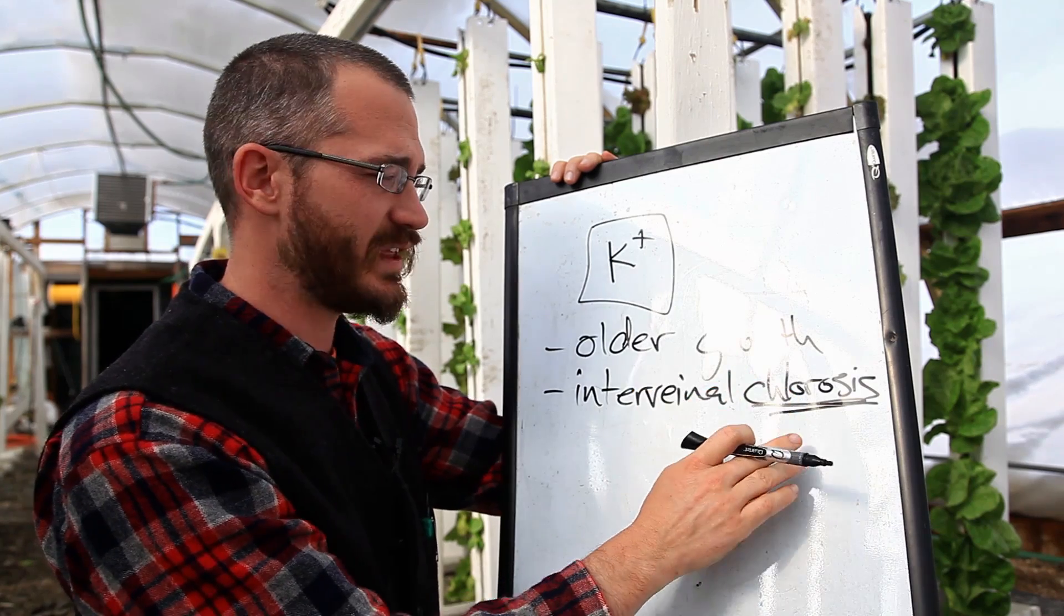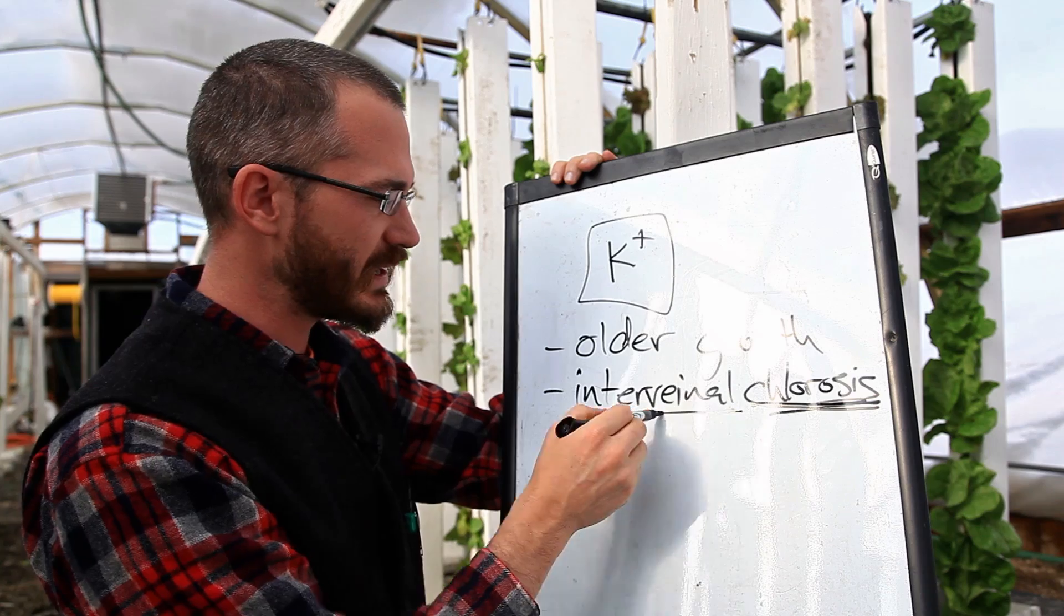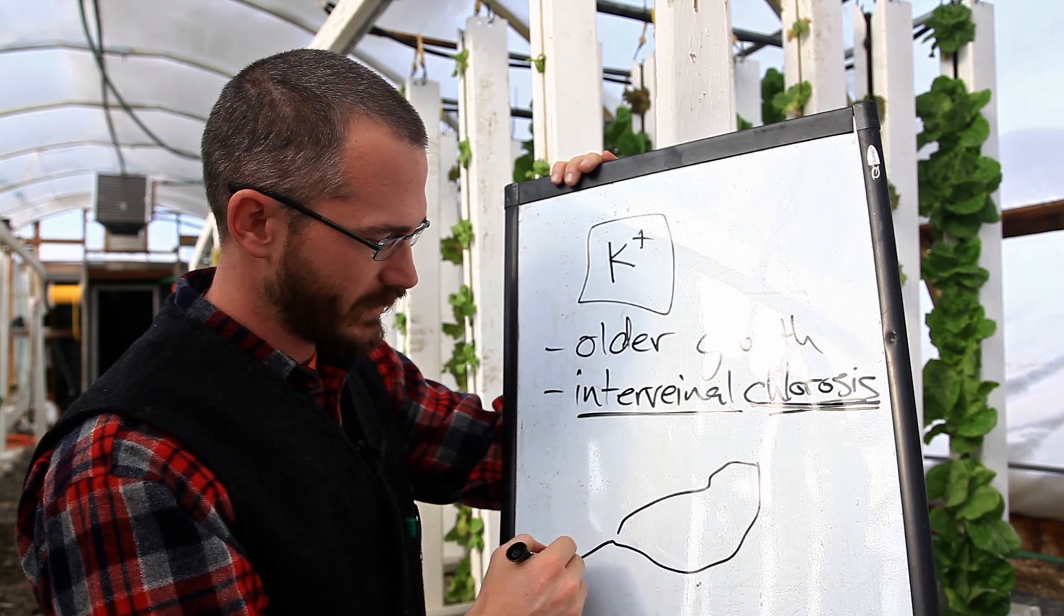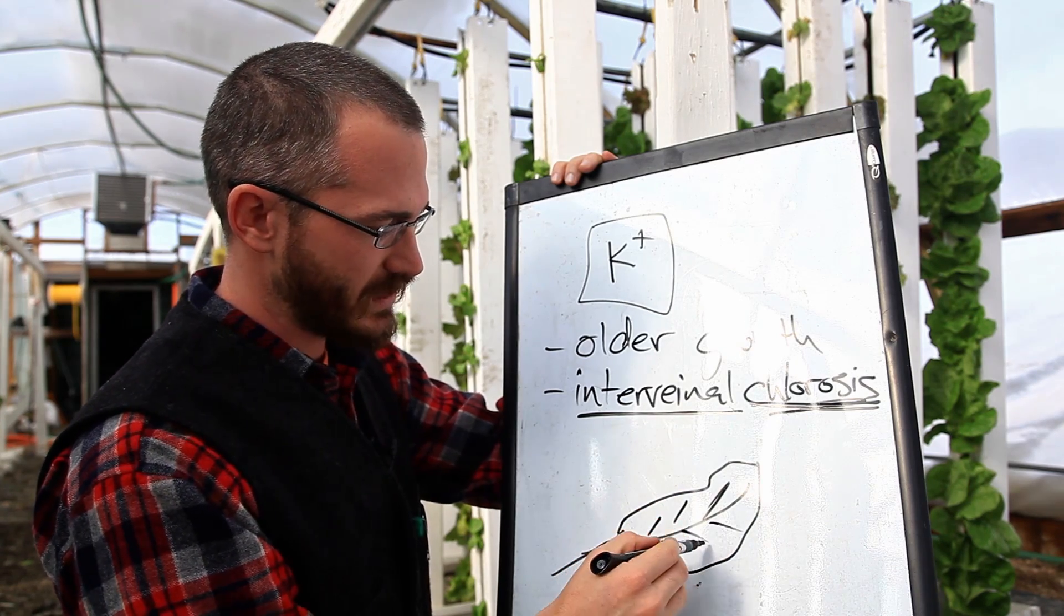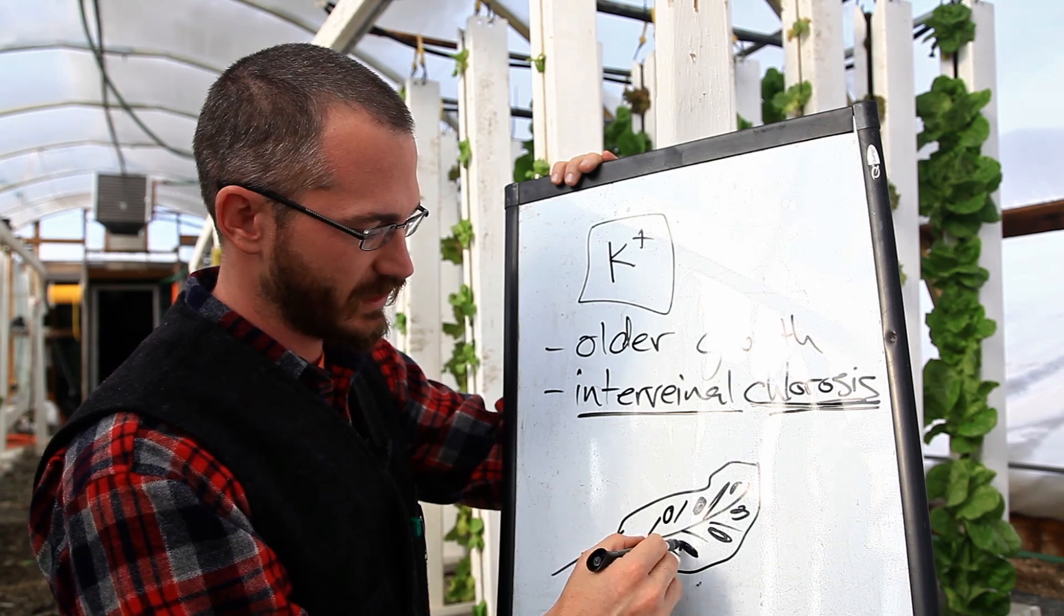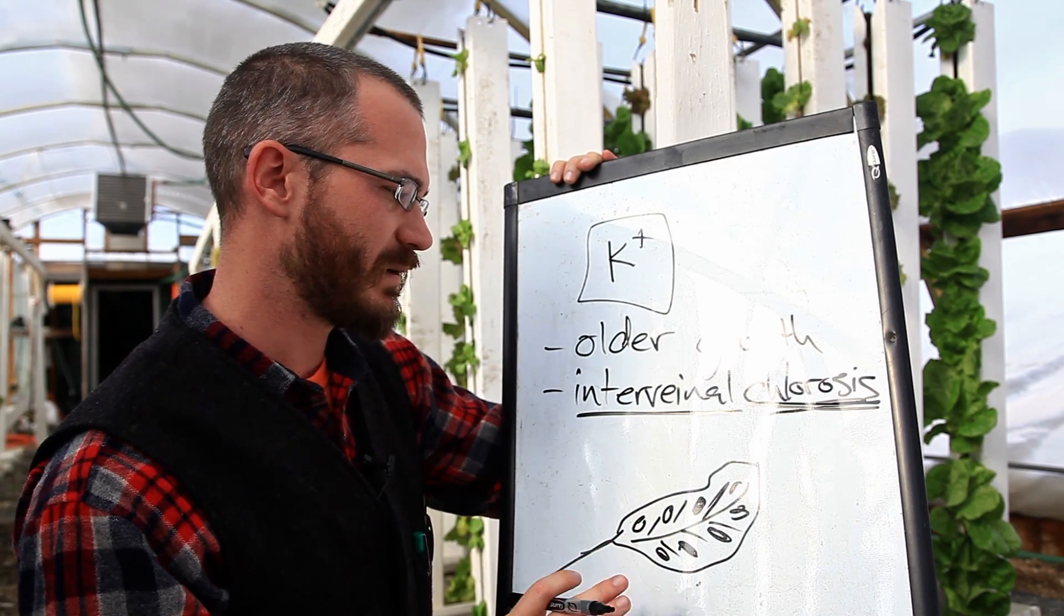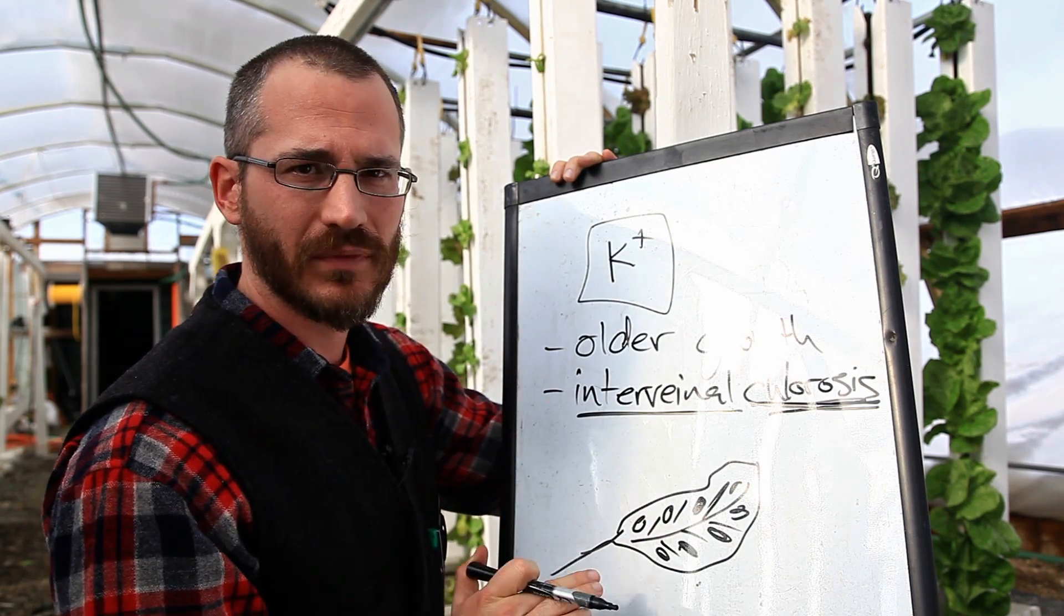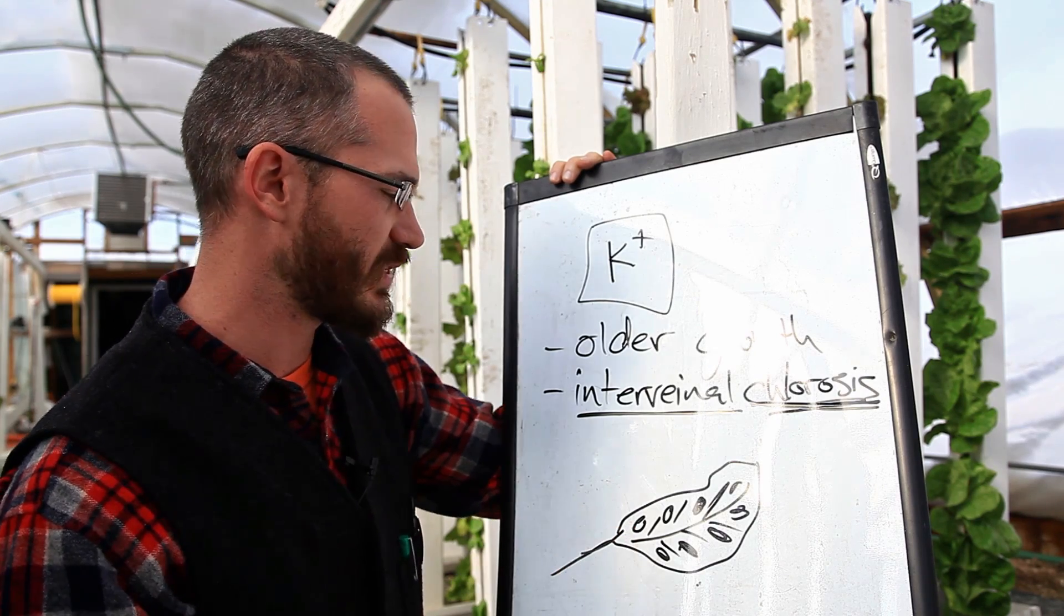We've discussed that in the iron video. But this yellowing is between the plant veins. So if we have a plant leaf here, and we've kind of got these veins, the yellowing is happening in these areas between the veins of the leaf. And this type of chlorosis is what can help us distinguish potassium from other forms of chlorosis.